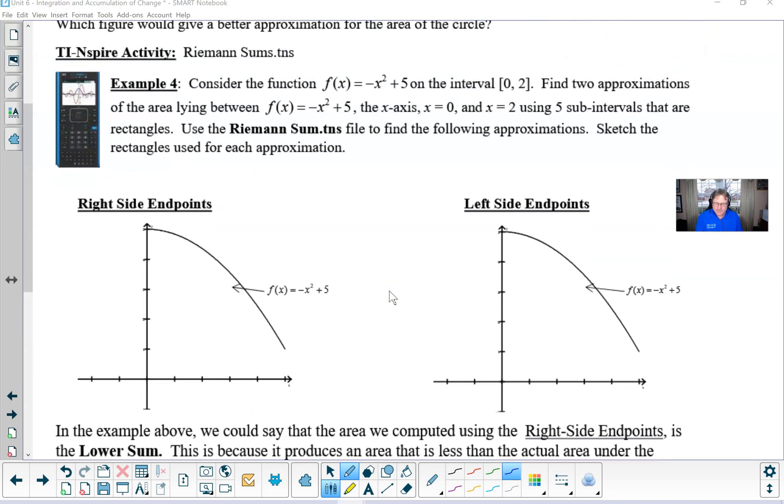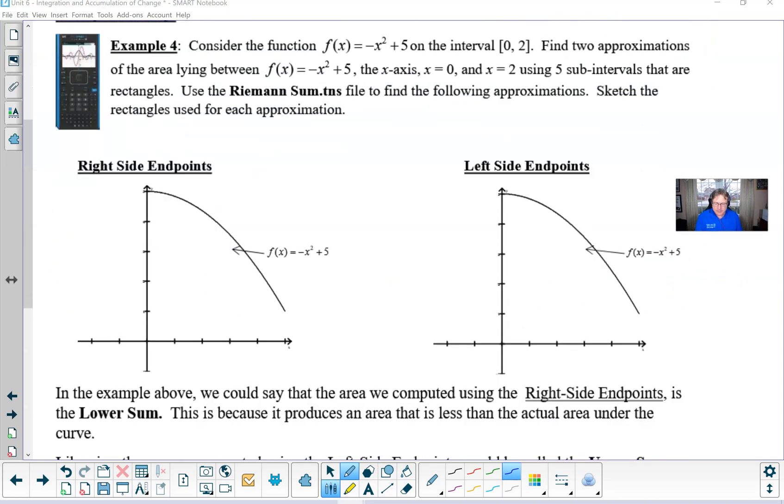So what this example says is let's consider the function f of x equal negative x squared plus 5 between the values 0 and 2. We are asked to find two approximations of this area that lie beneath or between this curve, the x-axis, x equals 0, and x equal 2 using the five subintervals that are rectangles. And we're best of all, we're going to be able to use the Riemann sum file to find the approximations. We want to make sure that we can sketch these as well.